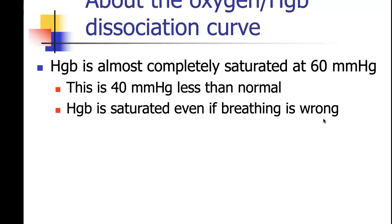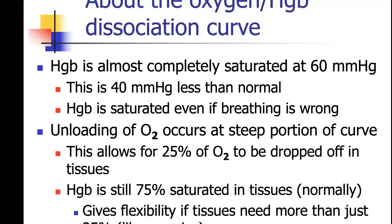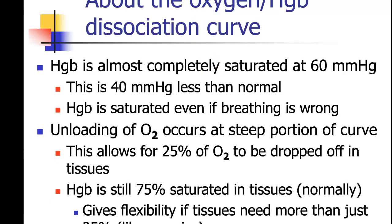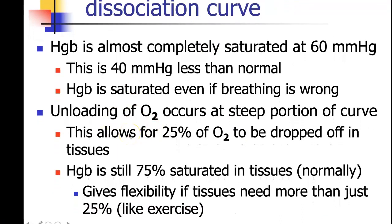Hemoglobin is almost completely saturated at 60 millimeters of mercury — that's 40 less than normal. What that means is that hemoglobin is saturated even if breathing is somewhat compromised. Unloading of oxygen at the tissues occurs at that steep portion of the curve, allowing for 25% of oxygen to be dropped off in tissues while hemoglobin is still 75% saturated normally. This gives us flexibility — normally only 25% is dropped off, but if you need more, like during exercise, you still have reserves in your hemoglobin.